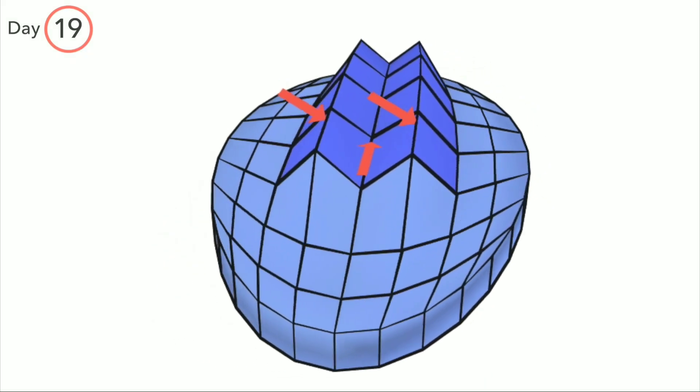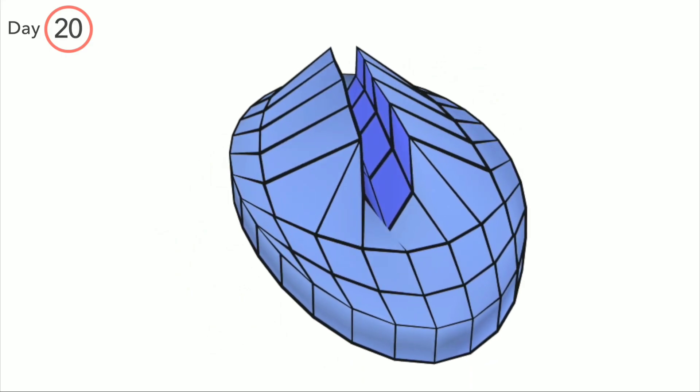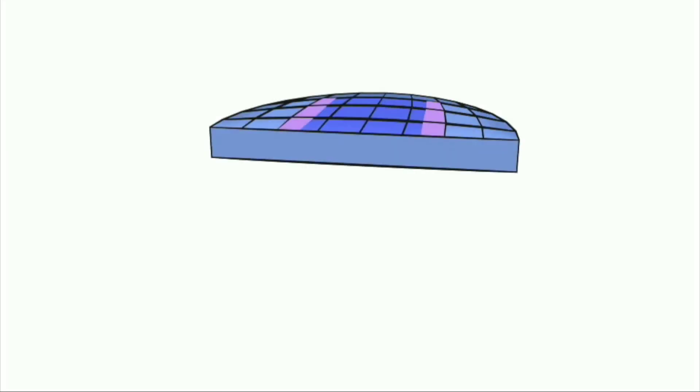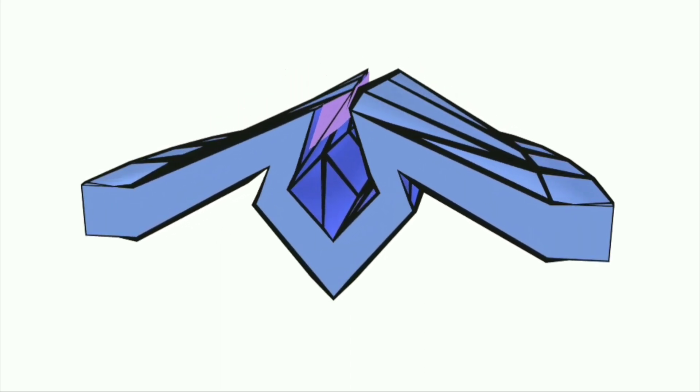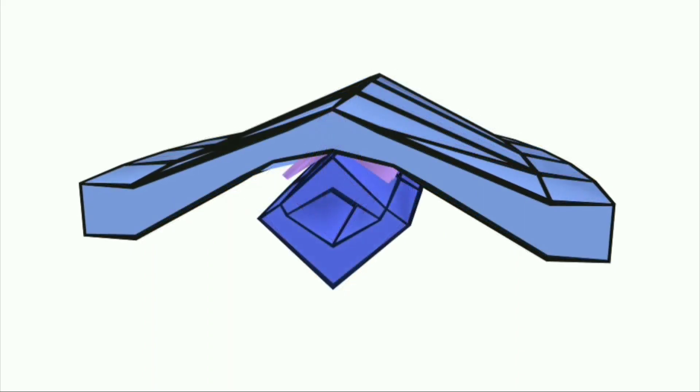These folds progress towards each other and begin to fuse around day 21. In this process, neural crest cells form a layer at the top of the closed neural tube. These crest cells contribute to the peripheral nervous system.